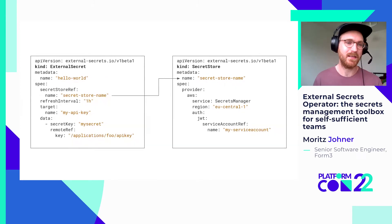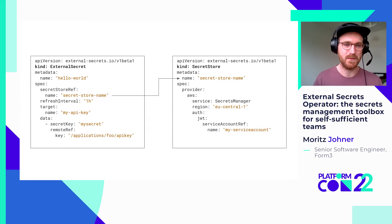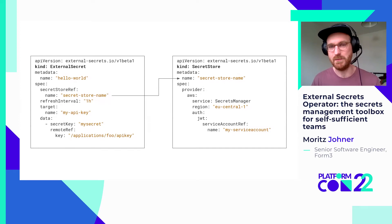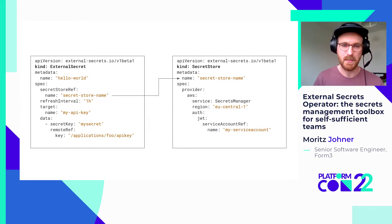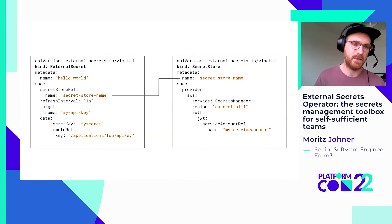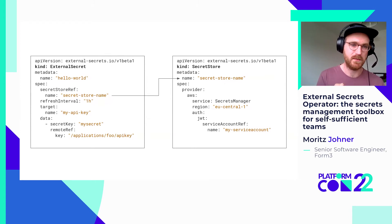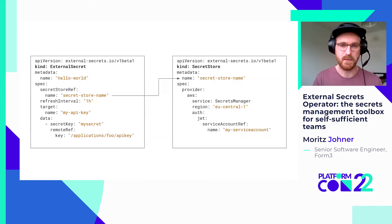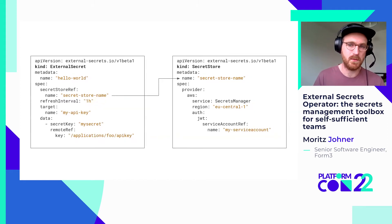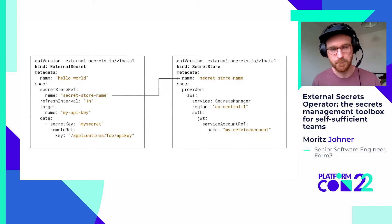The important takeaway here is that if we do GitOps, these would be the typical manifests stored in our Git repository. The key point is that we store only references to secrets, not encrypted blobs of secrets as you would with Sealed Secrets or SOPS, for instance.